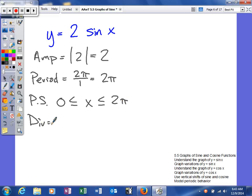Next, we're going to find our divisions. And we're going to find that by taking your period and dividing by 4. When you simplify that, you'll get π/2. Now what we're going to do is we're going to go ahead and see if we can't graph it.